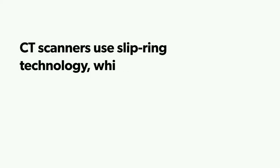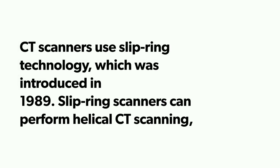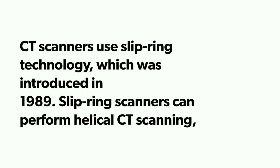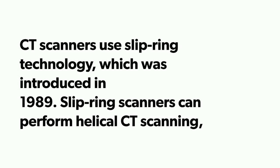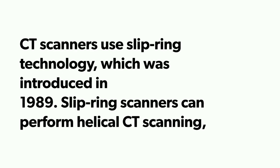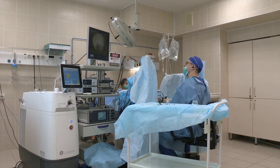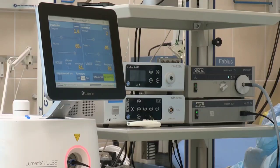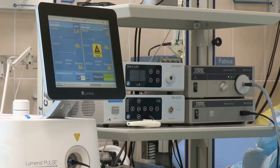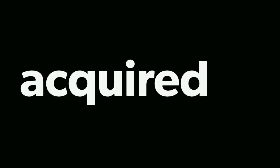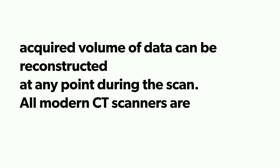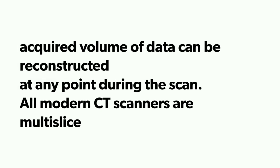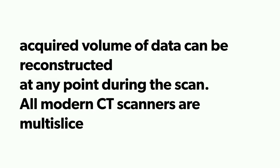CT scanners use slip ring technology, introduced in 1989. Slip ring scanners can perform helical CT scanning, in which the x-ray tube and detector rotate around the patient's body, continuously acquiring data while the patient moves through the gantry. The acquired volume of data can be reconstructed at any point during the scan.